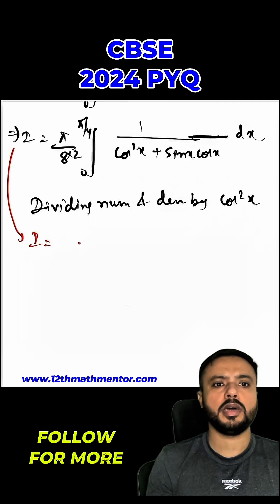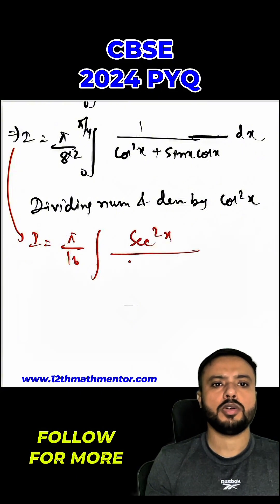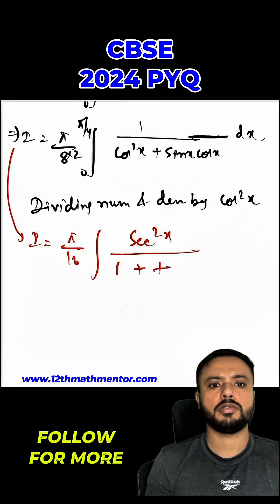This is our main integral. We are going to divide the numerator and denominator by cos square x. Pi upon 16. So, 1 upon cos square x would be sec square x. Cos square x upon cos square x is 1. And here, when you divide with cos square x, you will get sine x upon cos x, which will be tan x dx.